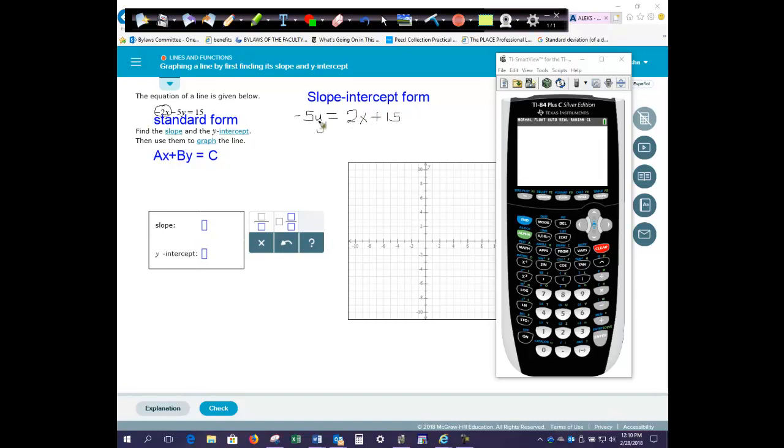Now, in order to get y by itself, we need to do the opposite of multiplying by negative 5. So we're going to divide the entire problem by negative 5. So dividing by negative 5 on the left, dividing by negative 5 on the right. And on the right-hand side, what you have to remember is that that negative 5 needs to divide both of these terms. You can't decide and pick which term. So now what we have is y equals negative 2 fifths x minus 3.